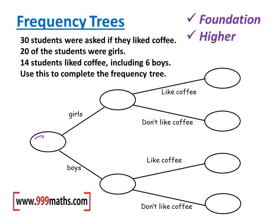30 students were asked if they like coffee, so we place 30 here. 20 of the students were girls, so there are 20 girls, and 30 take away 20 means there must be 10 boys. 14 students liked coffee, meaning this part and this part of the tree must add up to 14 — including six boys. So six of the boys liked coffee, and that means eight of the girls liked coffee, because altogether 14 students liked coffee.